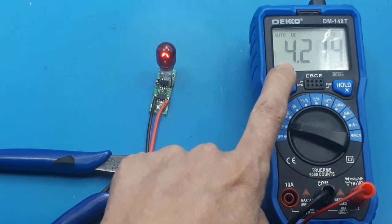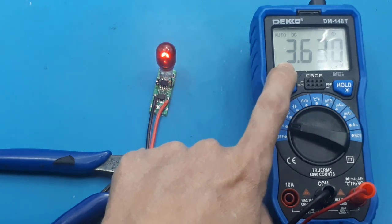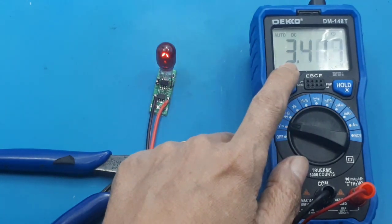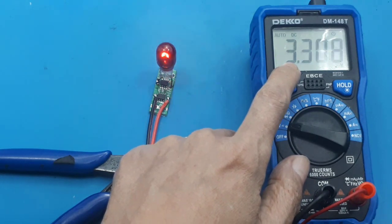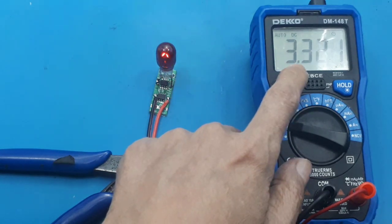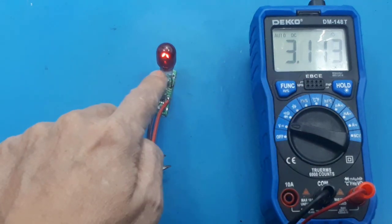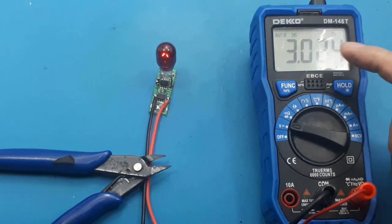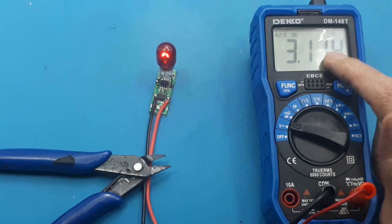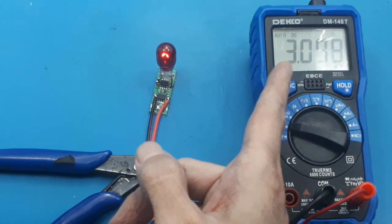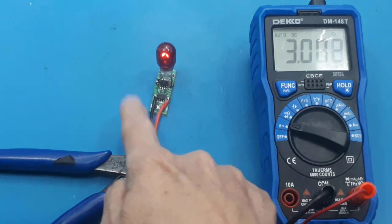Dalam percobaan ini saya akan mencoba tegangan minimum dia masih terlihat berkedip. Saya kecilkan tegangan inputnya. 4 masih bisa, 3.6 masih bisa berkedip kalian lihat, 3.2 masih bisa, 3 volt jadi masih bisa. Tapi menurut saya amannya minimum 3.3 volt saja. Tapi kalian lihat tegangan 3 volt inputnya masih bisa terlihat menyala, artinya rangkaian bekerja.